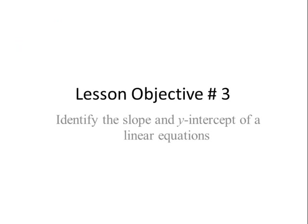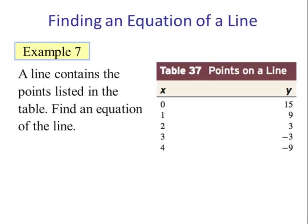Example 7: A line containing the points listed in the table. Find the equation of the line. We have our x values and we have our y values. And if we want to find the equation of a line, we want to find m and b so we can put it in the form y equals mx plus b.